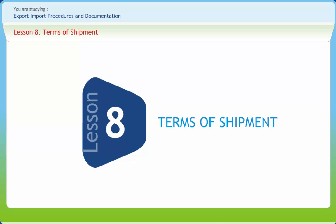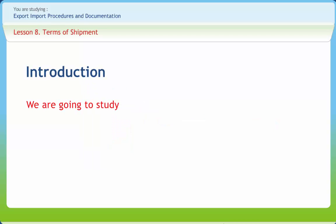Terms of Shipment. The exporter must be aware of different modes of transport, especially for performing the overseas part of the journey. The choice of carrier, whether an aircraft or a ship, will depend on many factors including product and marketing characteristics as well as cost and non-cost factors. In addition to commercial aspects of movement of cargo to the port of shipment, the exporter is required to comply with an important legal requirement. In this lesson, you will study about the various aspects related to the terms of shipment.